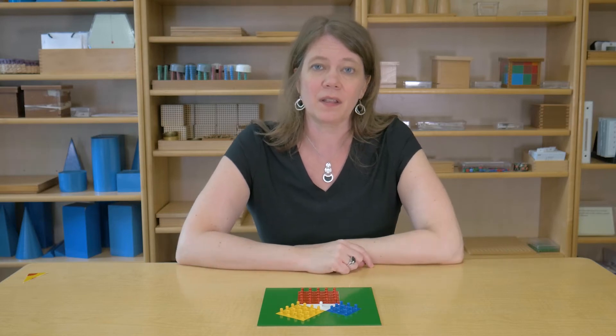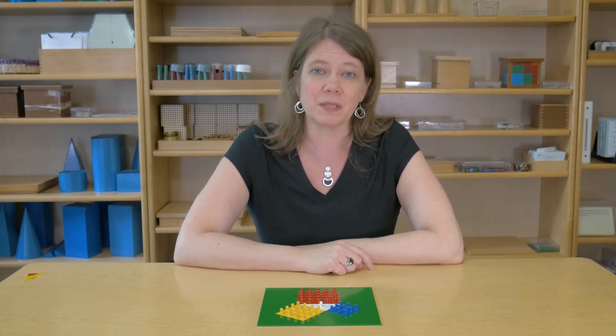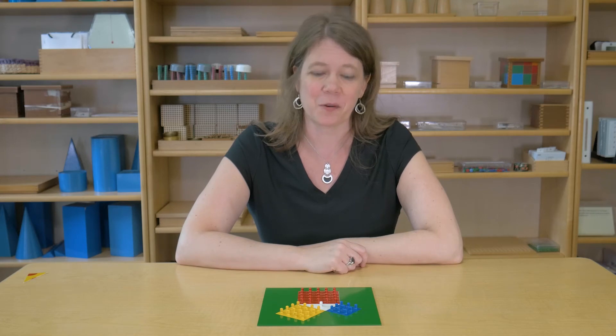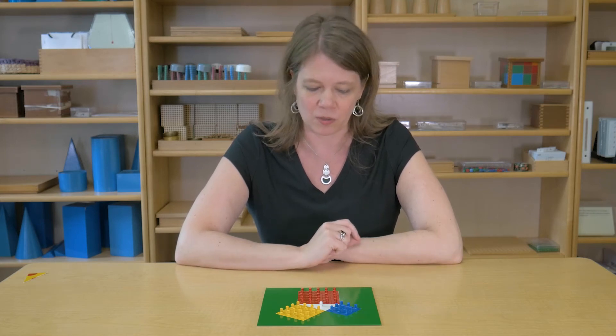So let's see if the sum of the squares built on the legs of this right triangle equal the square built on the hypotenuse. Okay, so let me show you how we can do this.